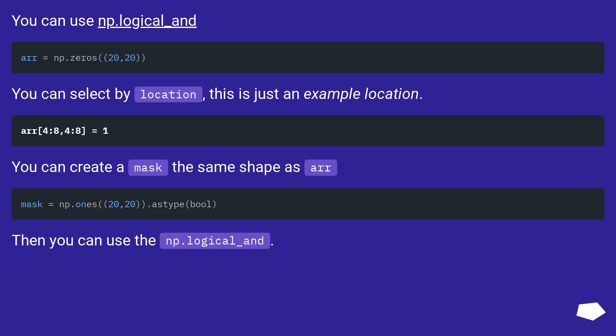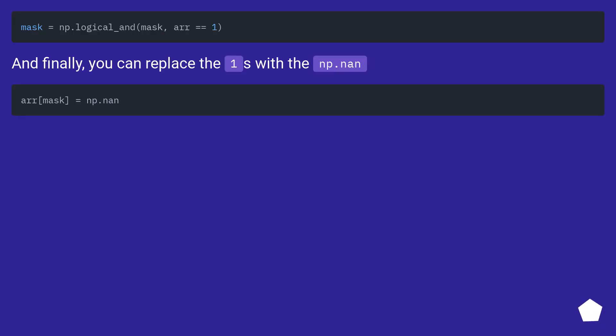You can use np.logical_and. You can select by location, this is just an example location. You can create a mask the same shape as R. Then you can use the np.logical_and. And finally, you can replace the ones with the np.nan.